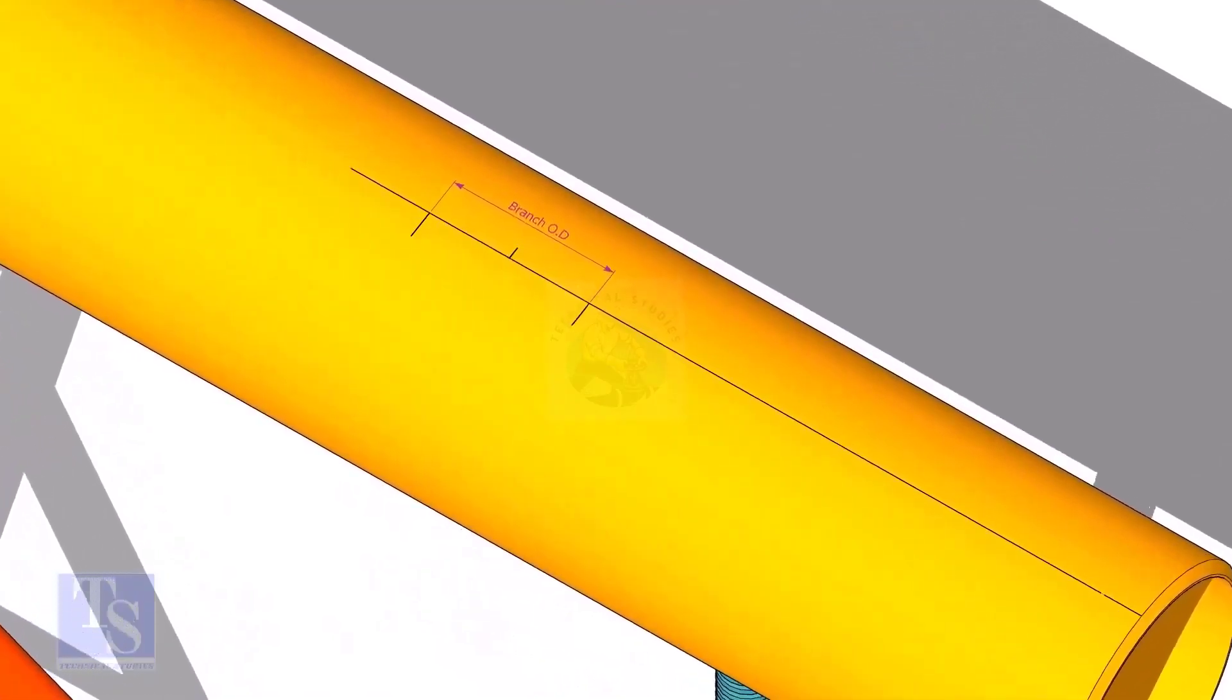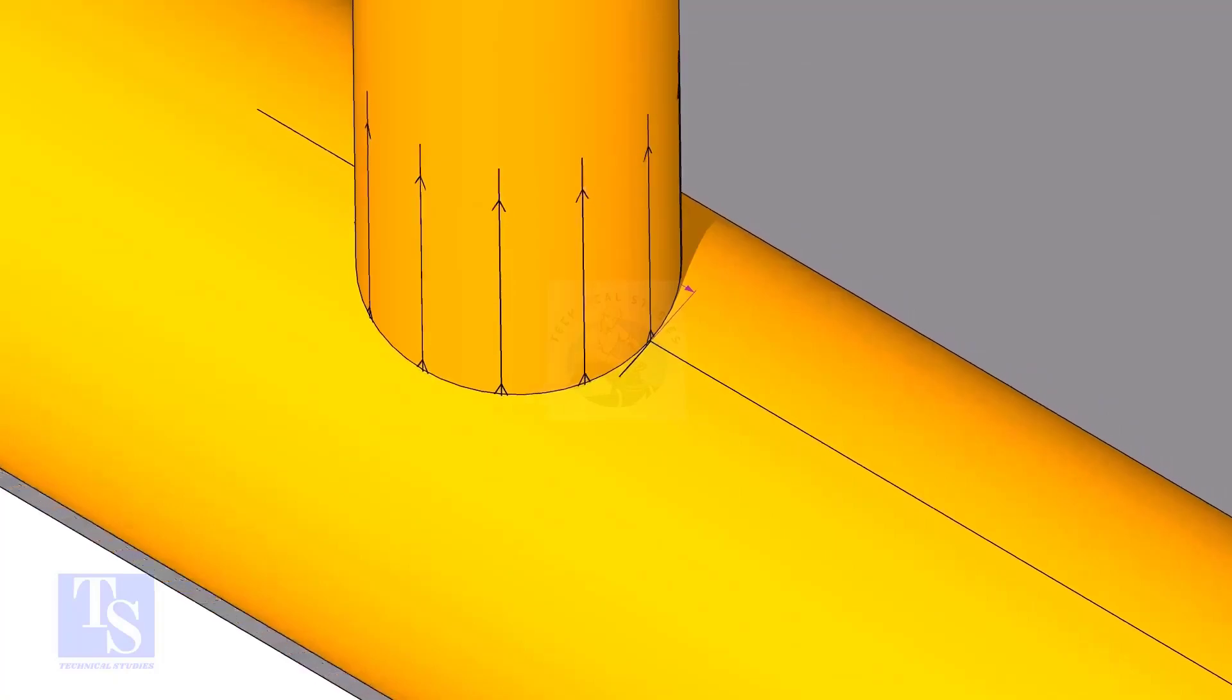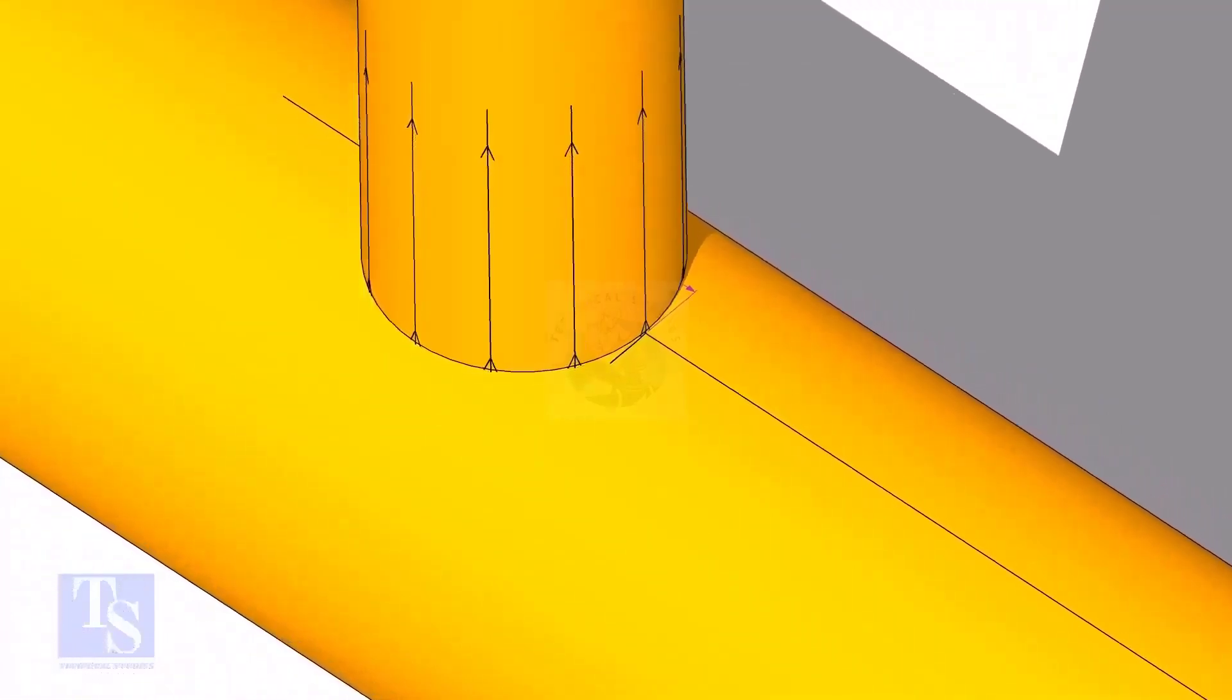Mark the branch OD on the center line of the header. Put the branch exactly on this marking, matching the branch center line.